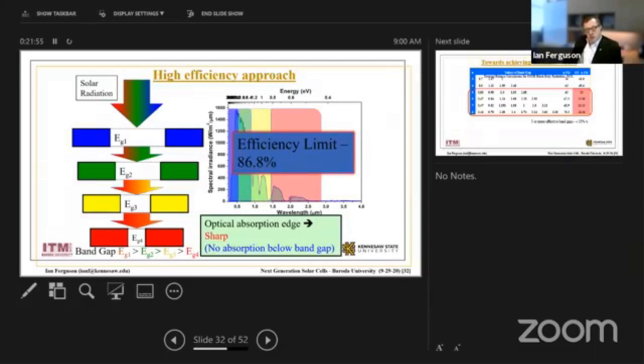The Shockley-Queisser limit, which is a theoretical limit if you do this properly, can take you up to about 86.8%. I don't need to read what's on the slides, I'm sure you can do that.